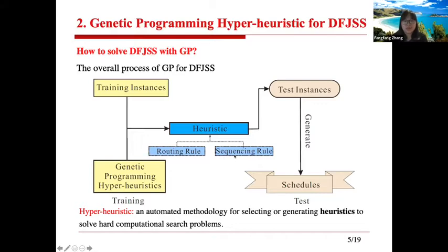How do we measure the performance of our proposed algorithm? The output is the heuristic, which we then test on unseen instances. Based on the heuristic, we generate schedules that tell us when each job starts and finishes. From this processing information, we calculate the objective to measure the performance of the algorithm.